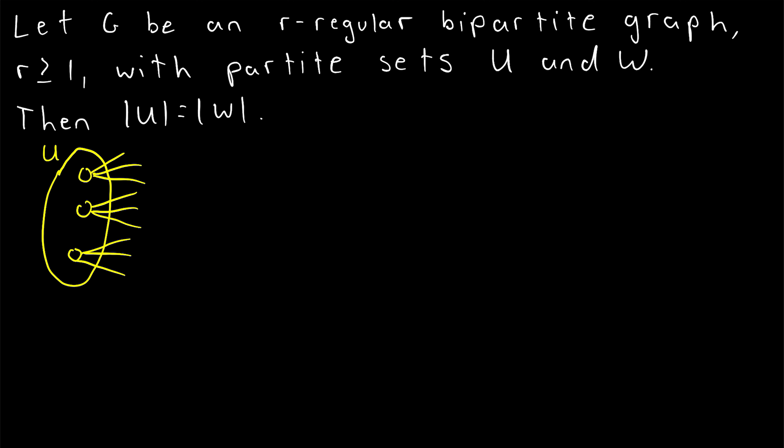And we won't be missing any edges because there isn't an edge that's not incident with a vertex of U. For such an edge to exist, it would have to join two vertices in the other partite set W, which contradicts the definition of a bipartite graph.